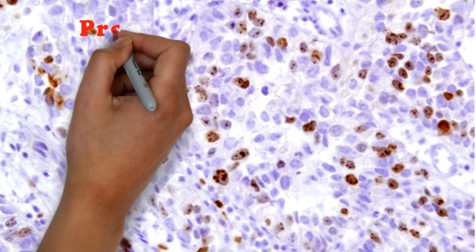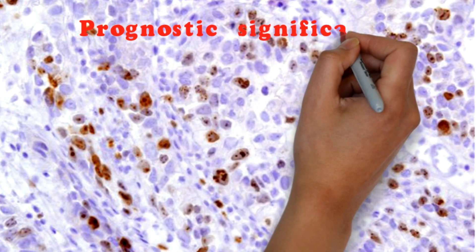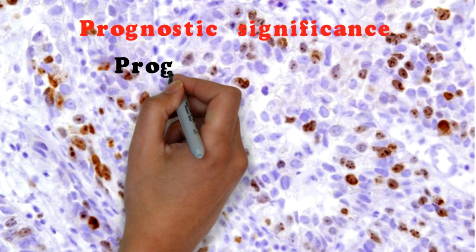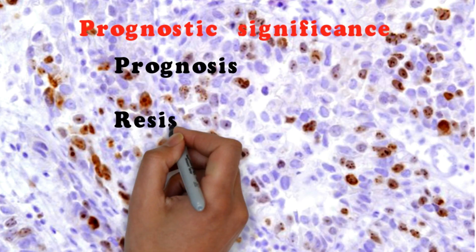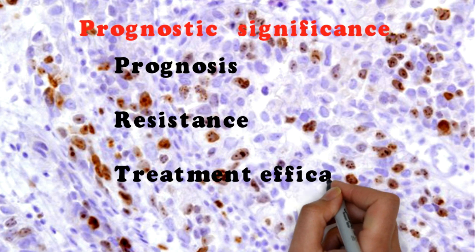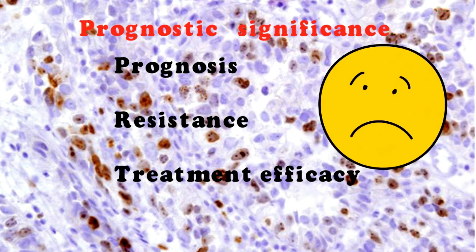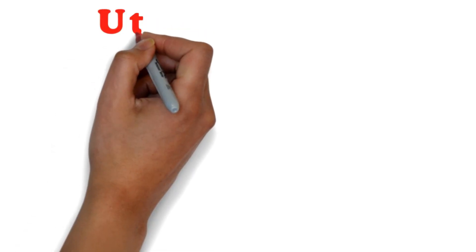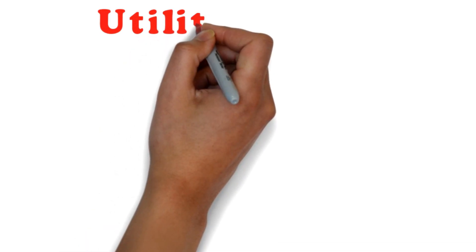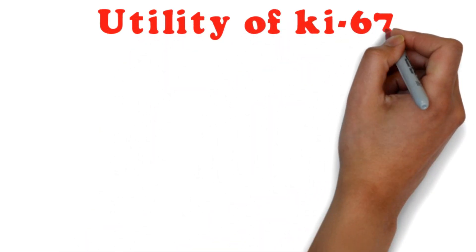Now let's move on to the prognostic significance of ki-67. It is used for assessing prognosis as well as resistance to chemotherapy and treatment efficacy. A high percentage of staining reflects worse prognosis.